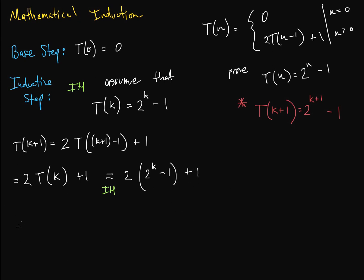Now we just do some more algebra and hope that we come up with this. So we have 2 times 2 to the k minus 2 plus 1. And of course, we get 2 to the k plus 1, and this is minus 1, and that is what we were looking for. So we have proved that this is true with mathematical induction. And you can do your little proven thing there.